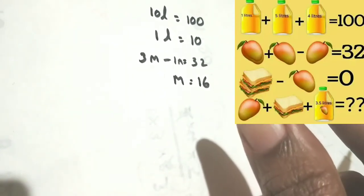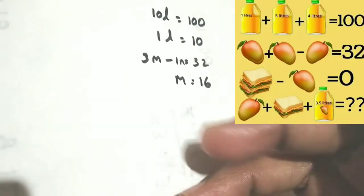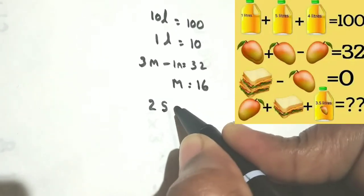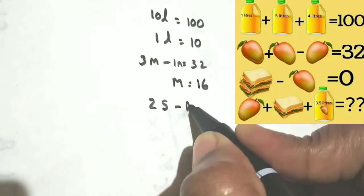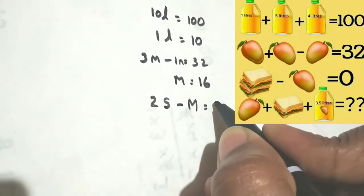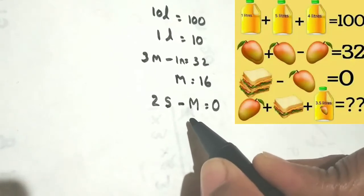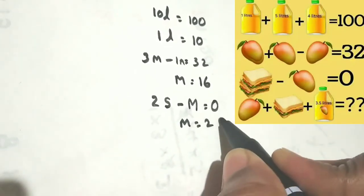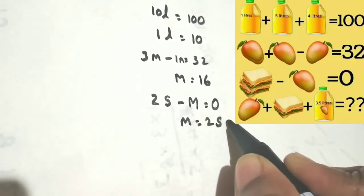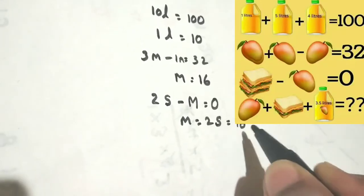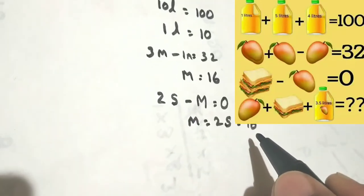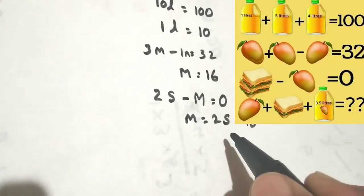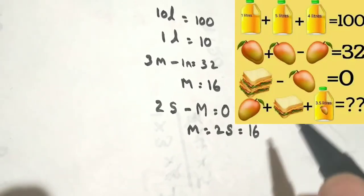Now observe the third line. There is a double sandwich. So I am writing: double sandwich minus single mango is equal to 0 rupees as given. That means mango is equal to double sandwich. Mango cost is how much? 16. So double sandwich cost will also be 16 rupees.